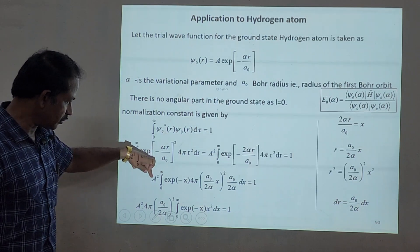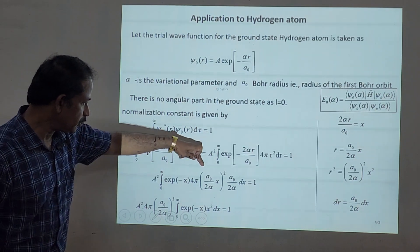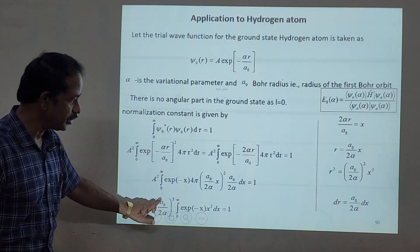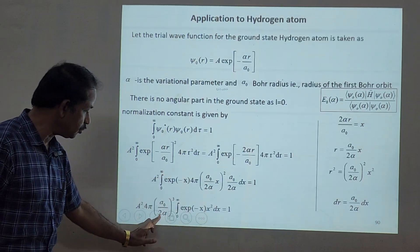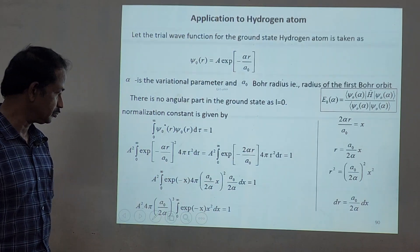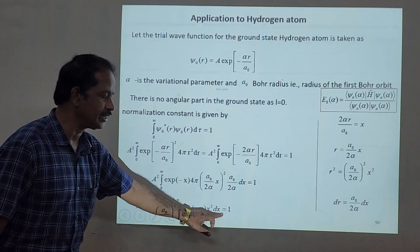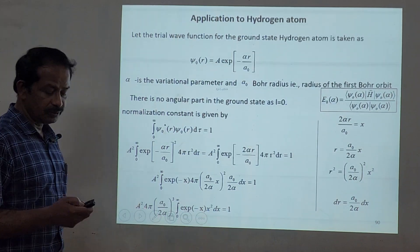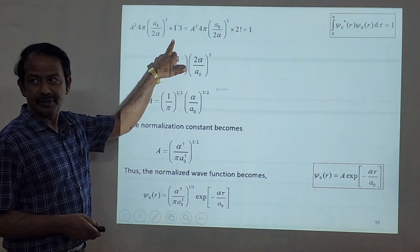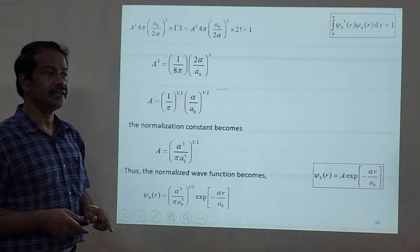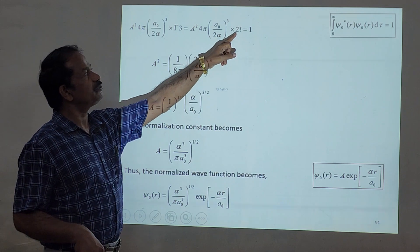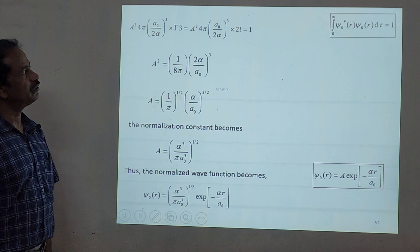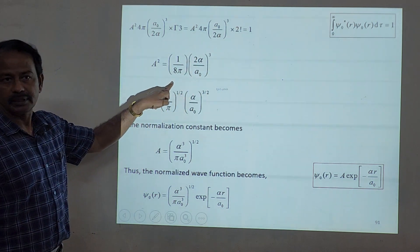Pulling constants out: a², 4π, and (a₀/2α)³ collected together — that is a₀³/(2α)³. The remaining integral is from 0 to infinity of e^(-x) x² dx, which equals 1. This is a gamma integral: Γ(3) = 2! = 2. So 4π times 2 gives 8π, meaning a² = (1/8π)(2α/a₀)³.